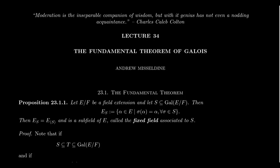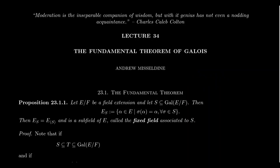We've already established how to go from fields to groups: you take the Galois group — the automorphism group of E over F. We can do this for any field extension E over F, with extra properties when E over F is a Galois extension. What we want to do now is reverse this process: given a subgroup of the Galois group, a set of field automorphisms, we can construct a field — the so-called fixed field. So without further ado, let's define our concept.